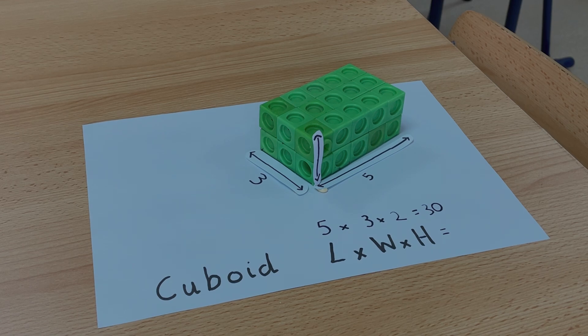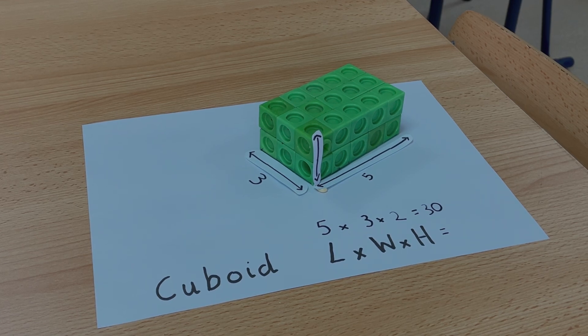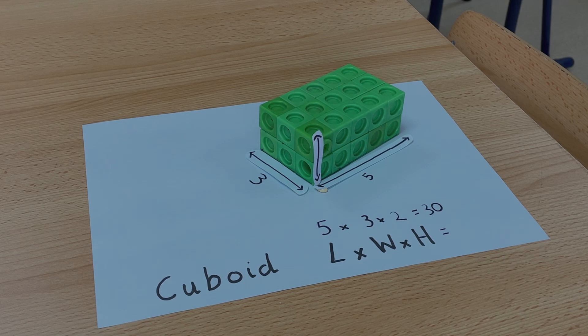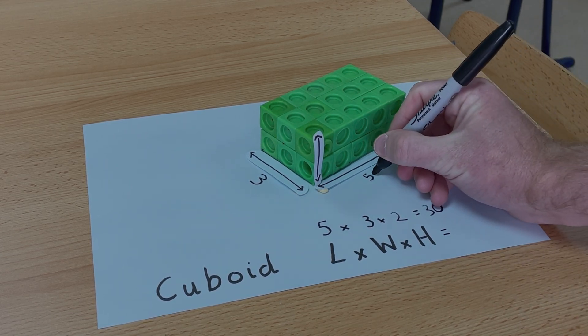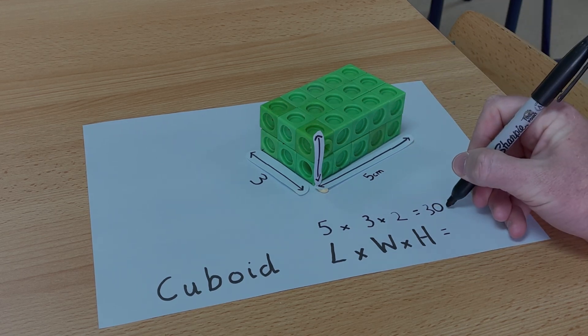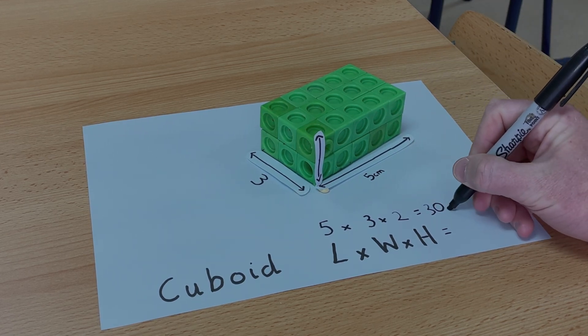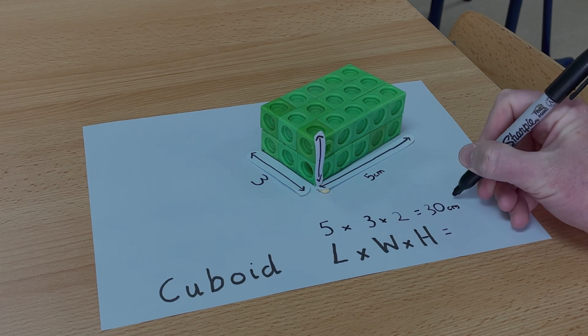And then all you need to remember to do is to write down the unit that you have been using to calculate the volume. So let's pretend that these are centimeters. The answer would be 30 centimeters cubed.